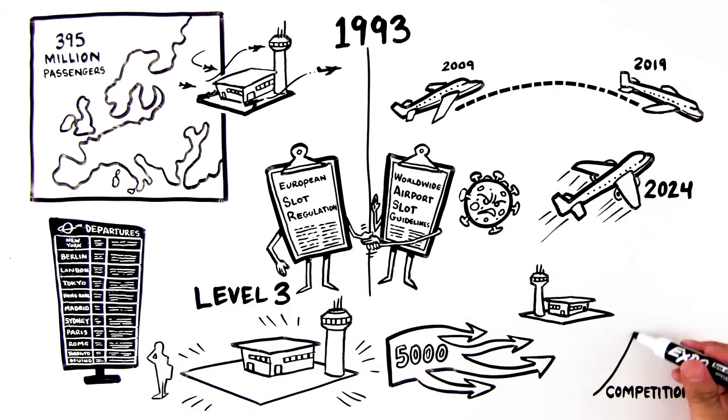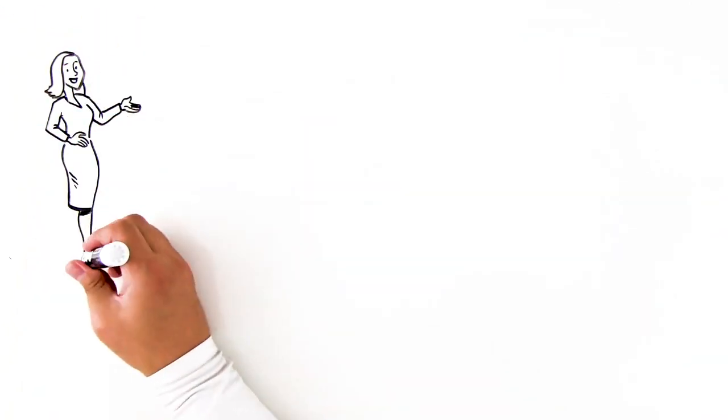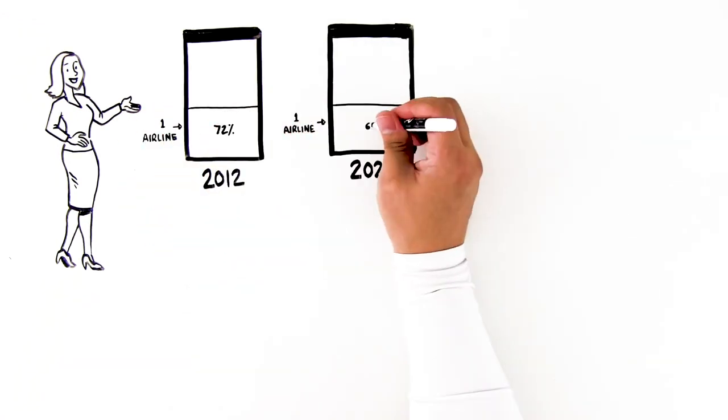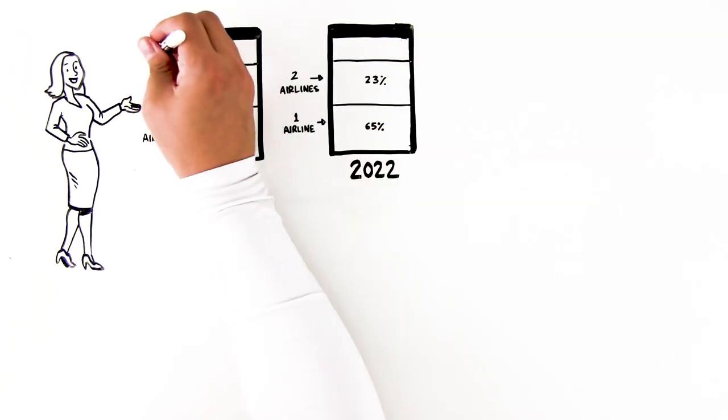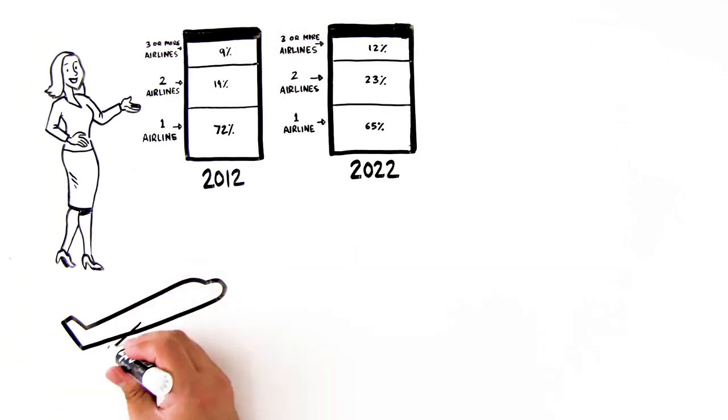And at the same time, the competition on these routes has also increased. From 2012 to 2022, the share of single-carrier routes has decreased from 72% to 65%, and the share of routes with three or more carriers has increased from 9% to 12%. Low-cost carriers have particularly benefited.